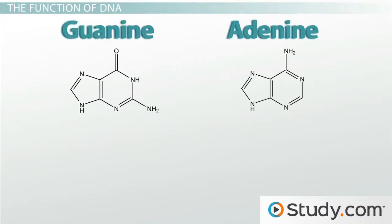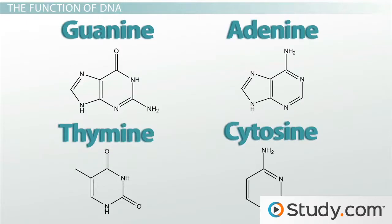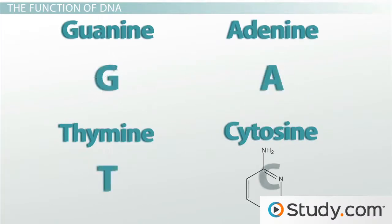Guanine, adenine, thymine, and cytosine. They are often abbreviated by the first letter of each nitrogenous base: G, A, T, and C. They essentially function as a four-letter alphabet.